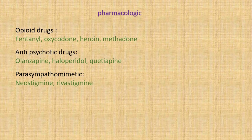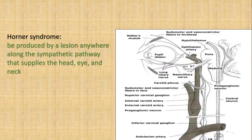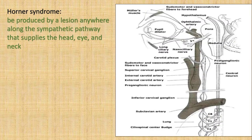Pharmacological causes of miosis include opioid drugs such as fentanyl, oxycodone, heroin, and methadone. Antipsychotic drugs such as olanzapine, haloperidol, and quetiapine. Parasympathomimetic drugs such as neostigmine and rivastigmine.